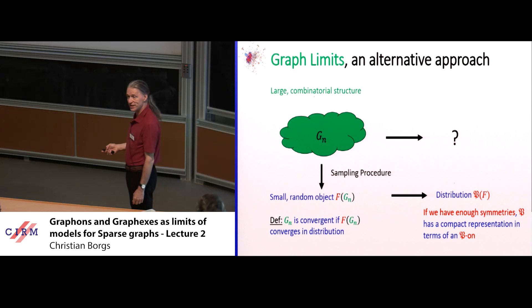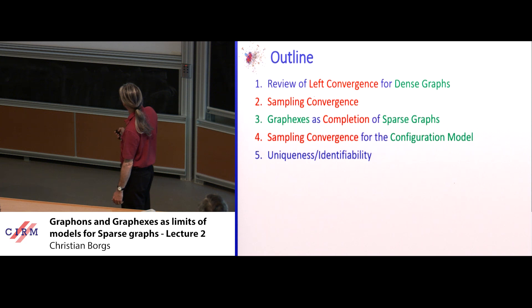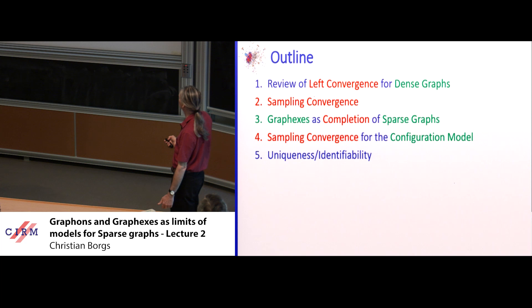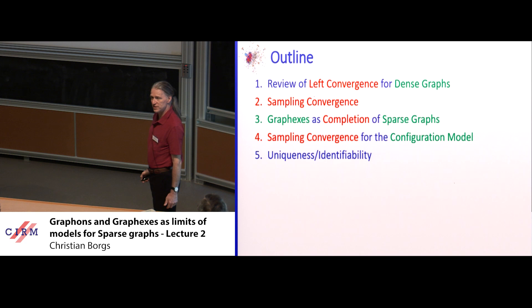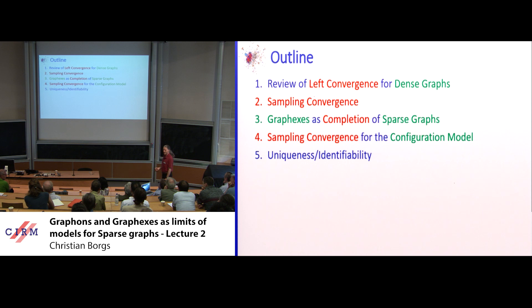Let me walk through that for dense graphs. I will do this for dense graphs, then go to sparse graphs, introduce something called sampling convergence, then come to graph axes, give some examples including the configuration model, and if I have time, represent 108 pages of proofs in one slide.